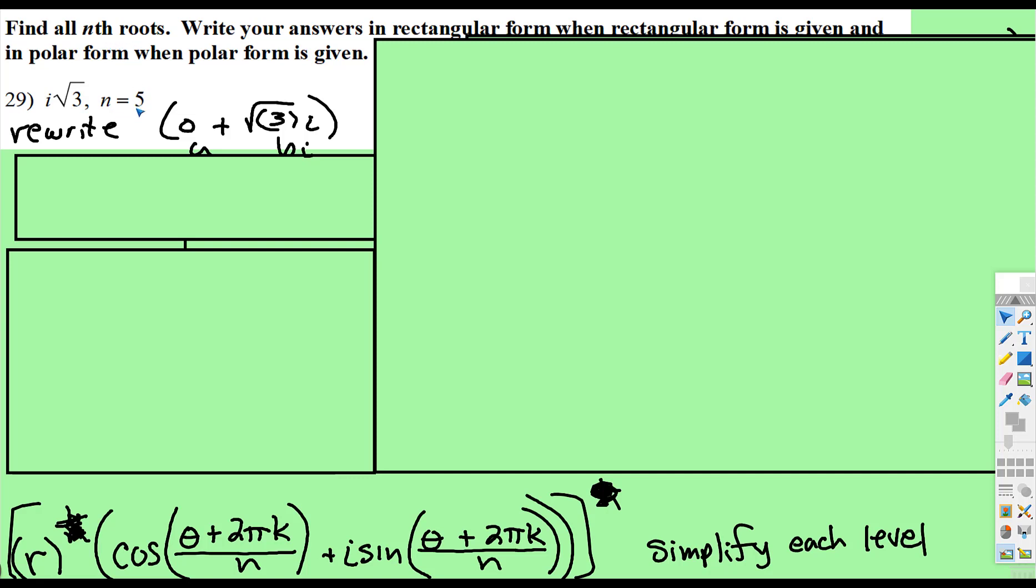And if the nth root is 5, that's what the n represents, how many roots. So it's the 5th root, there will be 5 answers. These are a pain in the rear. It's not that they're super difficult. Once you get the rhythm, it's just that they're a colossal pain.